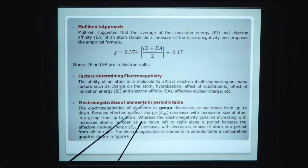Electronegativity decreases as we move from up to down in a group because effective nuclear charge decreases with increase in size of the atom. Whereas electronegativity goes on increasing with increased atomic number as we move left to right along a period because the effective nuclear charge Z-effective increases with decrease in size of atom in a period from left to right. The electronegativity of elements in periodic table are shown in comparative graph in figure 6.